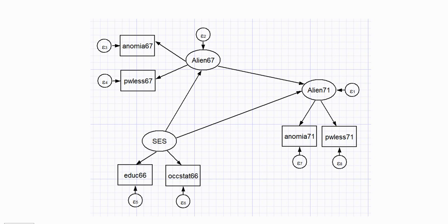In this video I'm going to provide a demonstration of path analysis with latent variables using the Stata command language. The figure on your screen was drawn using the graphical user interface in Stata, which is quite easy to use. However, it can become somewhat unwieldy when you have very complex models with a lot of variables and paths. Having a good idea about the use of Stata commands can be helpful when testing more complex models.